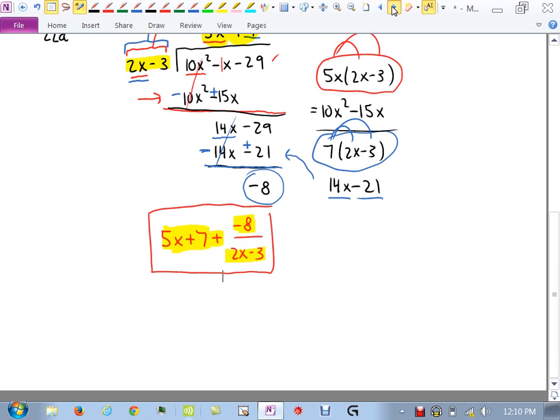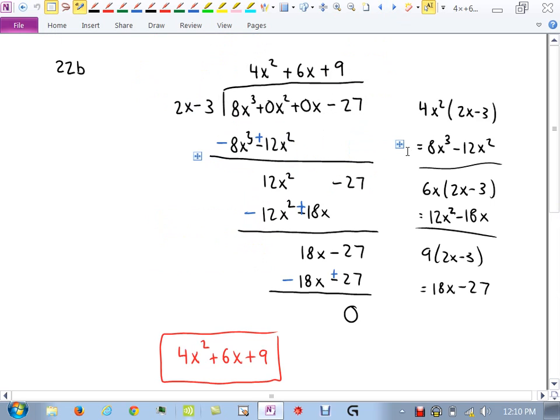Okay, next problem. 22b. So we have the original problem was 8x cubed minus 27 over 2x minus 3. What we need to do is make sure we rewrite this numerator in the division box, accounting for the spaces. We don't have an x squared term, we don't have an x term. So we put 0x squared and 0x. That helps us line things up later. Okay, now I ask myself, what do I multiply 2x by to get 8x cubed?